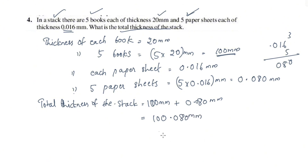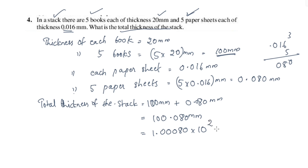We will convert 100.080 into standard form. The decimal point moves so that we get 1.00080 × 10 raised to 2. The number of digits shifted is 2, so 10 raised to 2. Checking: 1.00080 × 10² = 1.00080 × 100 = 100.080 mm. This is the standard form.